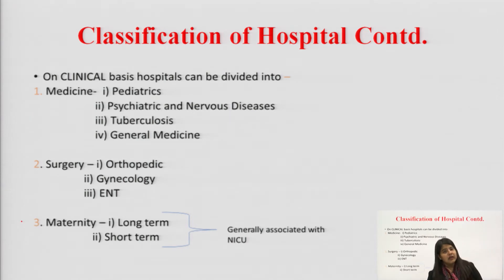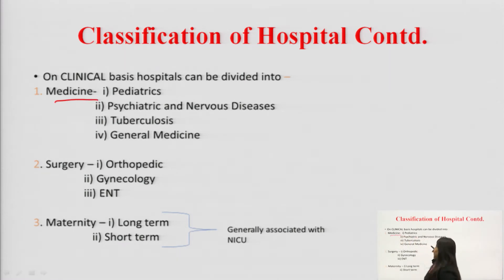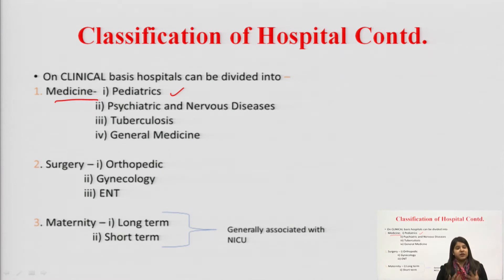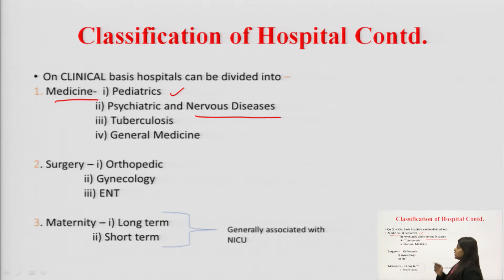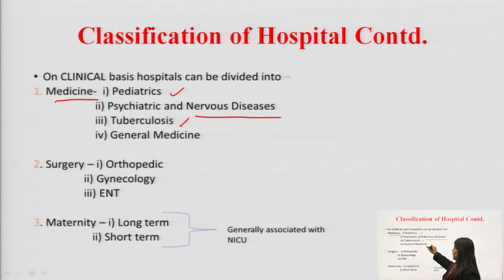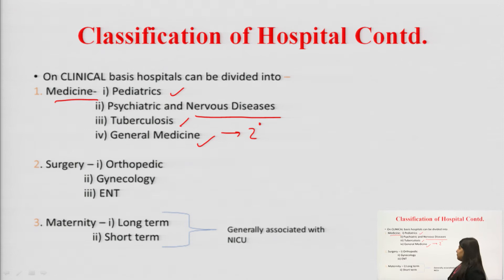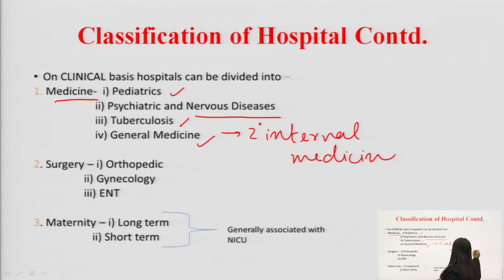On the clinical basis we can also divide hospitals into further categories. First is the medical hospital — within medicine we have the pediatrics department, which specifically cares for the pediatric population. There are also psychiatric and nervous diseases hospitals that take care of patients with nervous diseases or psychiatric disorders. General hospitals are secondary care hospitals specialized in internal medicine.